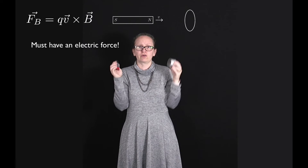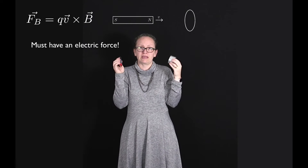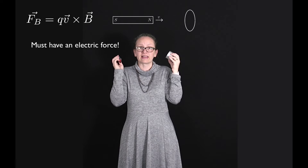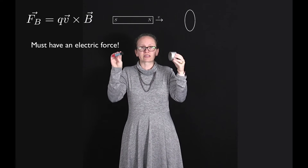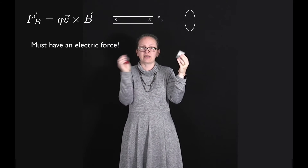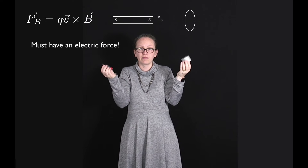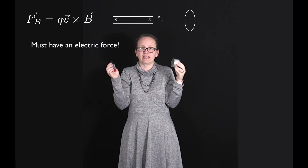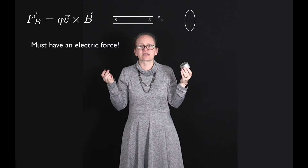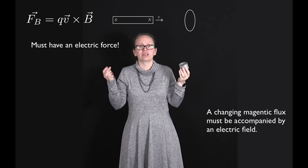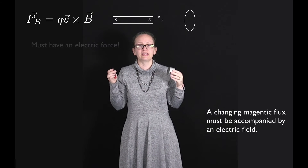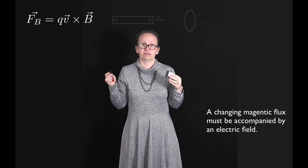It turns out that the only force that could be causing the electrons to move in this case is the electric force. So this tells us that when we move a magnet towards a conducting loop, we must be inducing an electric field. This tells us that a changing magnetic flux must be accompanied by an electric field.